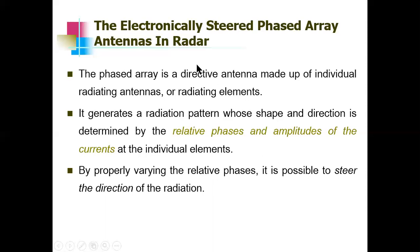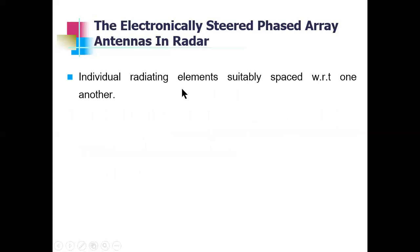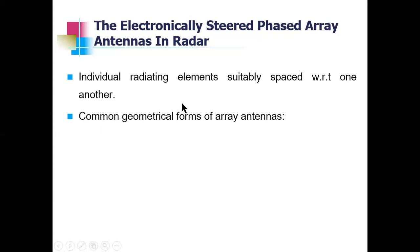To steer the direction of the radiation pattern, we change the relative phases. By properly varying the relative phases, we can steer the direction of radiation. The individual radiating elements are spaced equally with respect to one another — the spacing is denoted as small d.